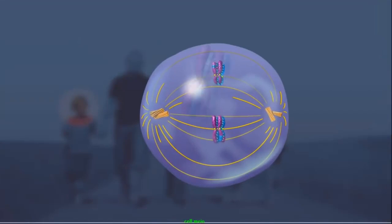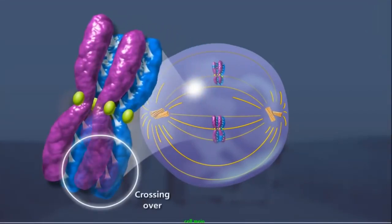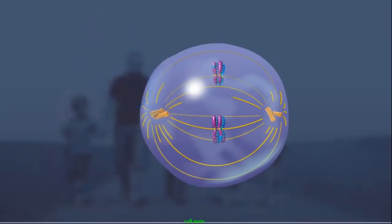In prophase I, non-sister chromatids can exchange DNA through crossing over, increasing the genetic diversity of individual chromatids.